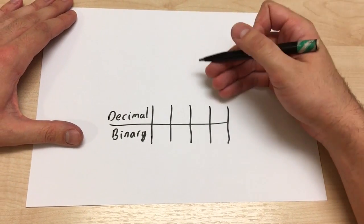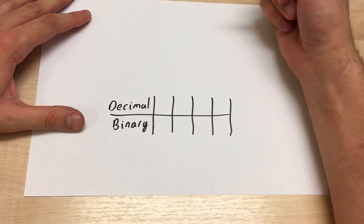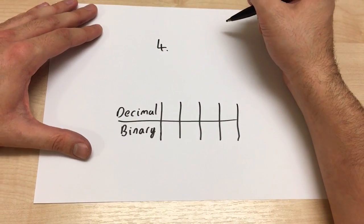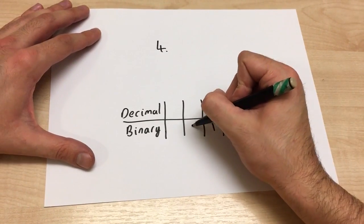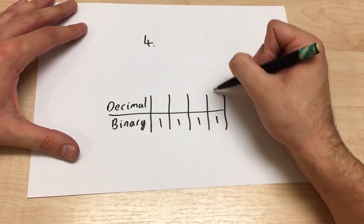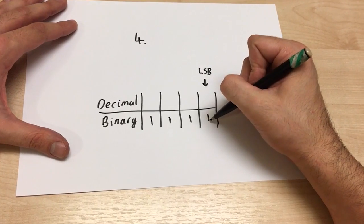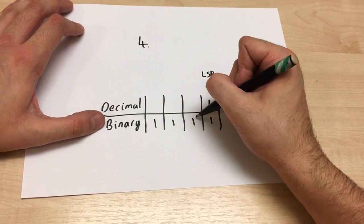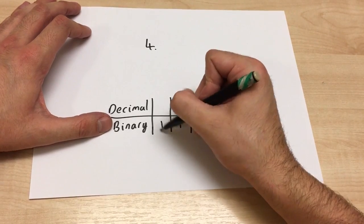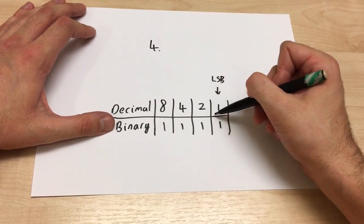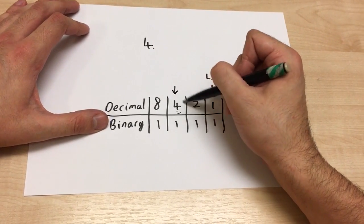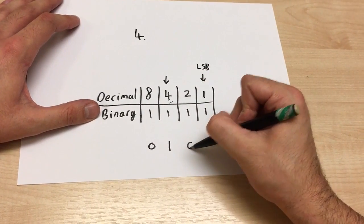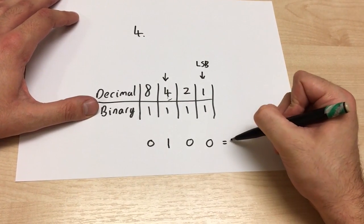If we're given a decimal number and asked to convert it to binary, the simple way is to draw it out. If we're given the decimal number 4, we draw our binary table and write the column values: 1, 2, 4, 8 for a 4-bit number. The first column is either 0 or 1, the second is 0 or 2, the third is 0 or 4, the fourth is 0 or 8. To get 4, we just need the 4-column bit to be high, so the binary is 0100, which equals 4 in decimal.